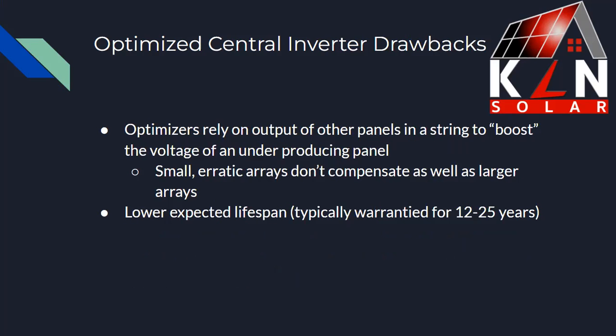Of course, optimized central inverters do have drawbacks. Optimizers rely on the output of other panels in the string to boost the voltage of an underproducing panel. This works 99% of the time, but if you've got small erratic arrays — two panels here, two there, two there all over the place on complicated roofs — they don't compensate as well as a larger array with multiple panels in a row all facing the same orientation. Also, there's a lower expected lifespan, since the inverter is processing the whole system's production, generating more heat and wear and tear. Typically they're warrantied from 12 to 25 years from the manufacturer.